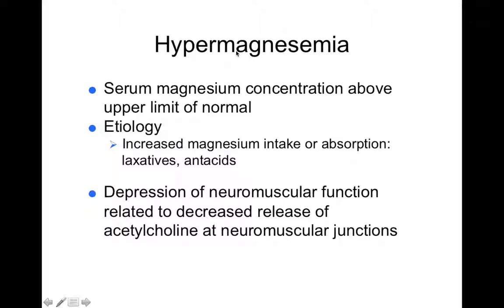Hypermagnesemia means high blood magnesium. This can come from too much intake or absorption from laxatives and antacids. This depresses neuromuscular function, leading to a decrease in acetylcholine at neuromuscular junctions.